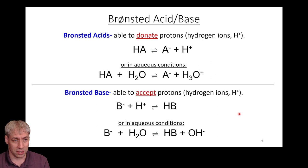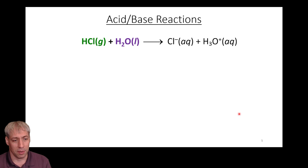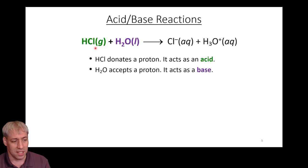In acid-base reactions, we take an acid, combine it with a base, and have a reaction. In this case, HCl is the acid and H2O is the base. HCl gives up a proton to become Cl-, and H2O accepts a proton to become H3O+. By definition, HCl is the acid and H2O is the base.